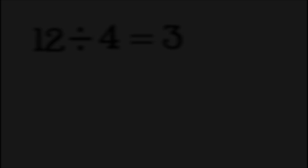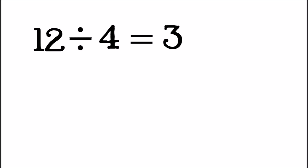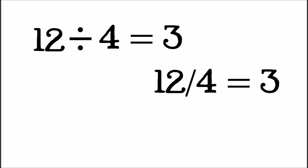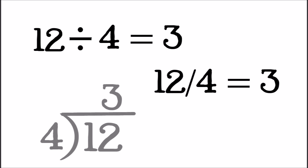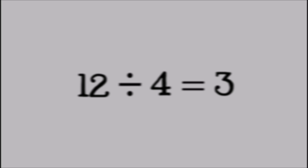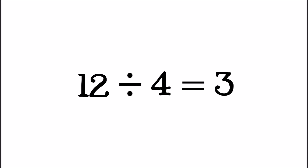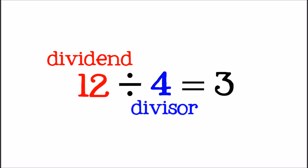There are three different ways to write division problems that you might see in your math work. Don't get confused — all of these ways mean the same thing. The three numbers in a division problem each have a special name. The number being divided is called the dividend. The number that the dividend is divided by is called the divisor. And the result of the division is called the quotient.